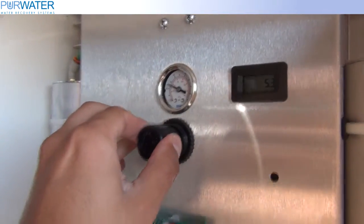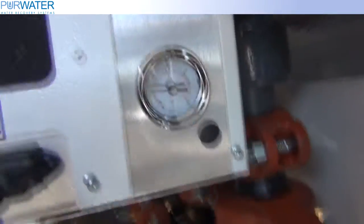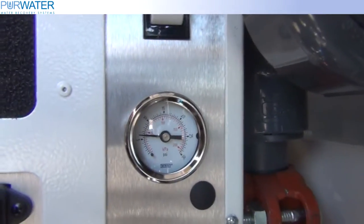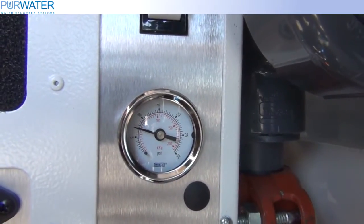On the right side of the unit, the pressure gauge should be set at 11 psi. If it is not, the adjustment knob located inside of the unit should be turned clockwise to raise the pressure to 11 psi.